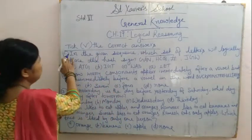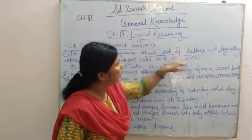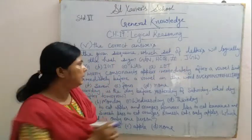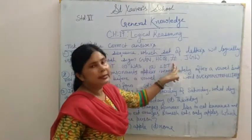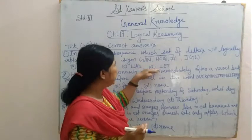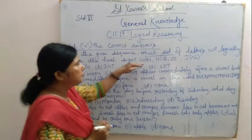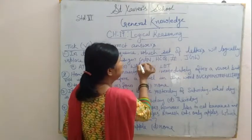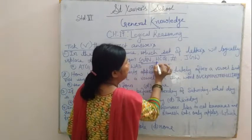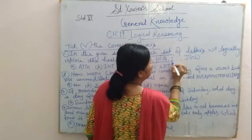Here is the first question. In this question you have to analyze this sequence logically. You have to recognize the pattern and find which of these will replace the blank. So let's see how this pattern goes. First, here is the letter G. After G comes H, after H comes I, and after I comes J.